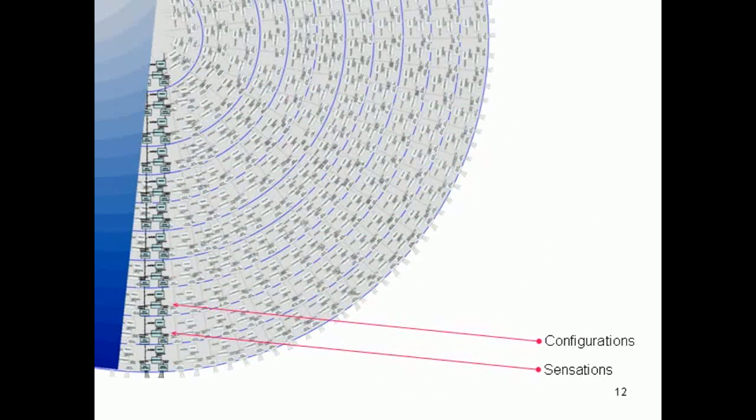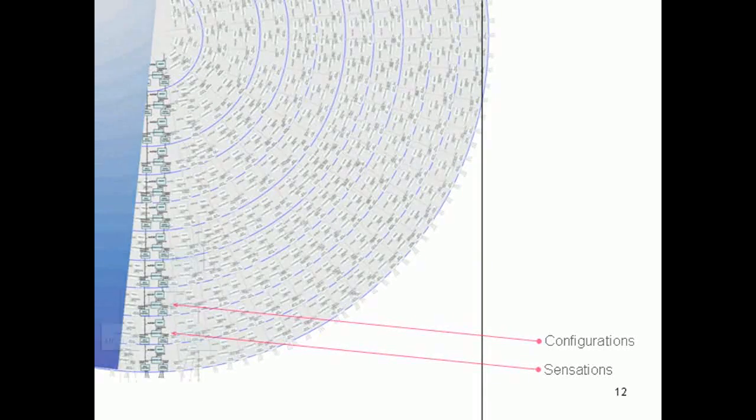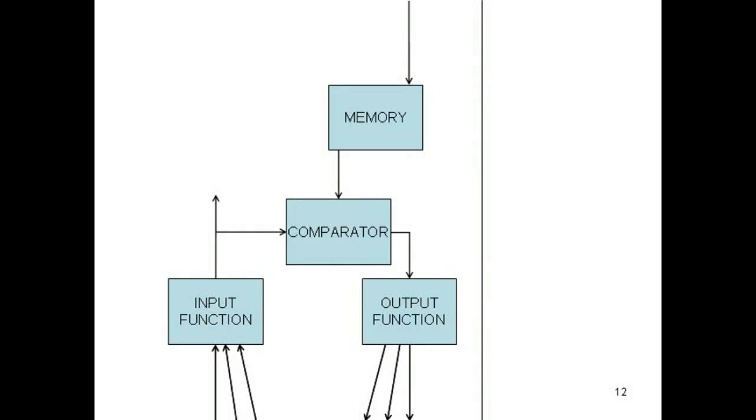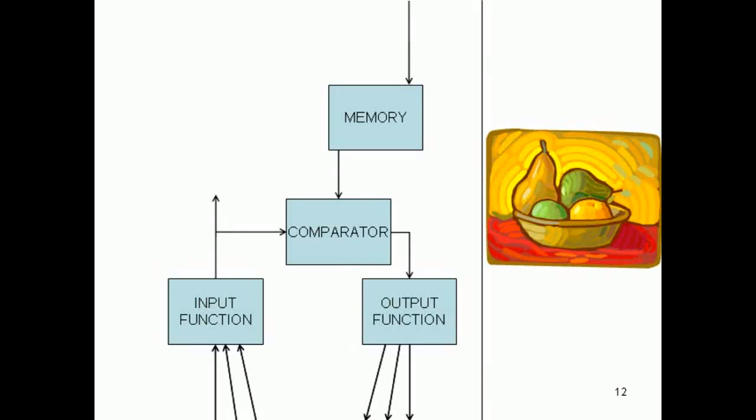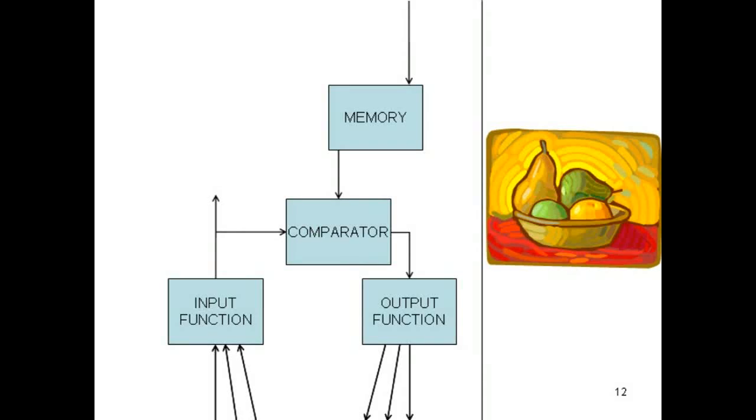Now that we understand how control system modules work in a hierarchy, let's look again at what the input function of each module does. A configuration-level input function, for example, takes in sensation-level perceptual signals, and interprets them as a bowl of fruit. That is to say, from those perceptual signals, it infers that there is a bowl of fruit out there at a certain place in the world.